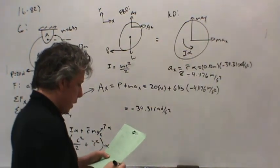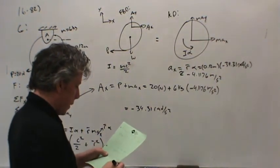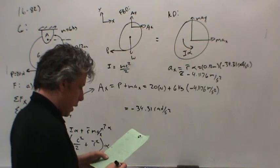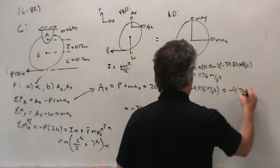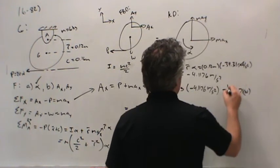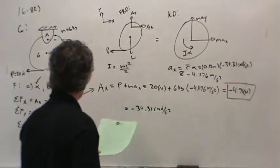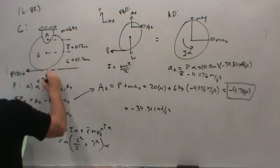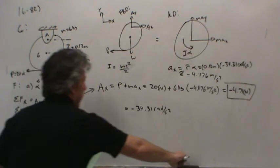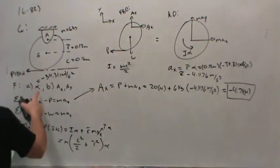We end up with newtons for both. That comes out to negative 4.71 newtons. So there's one of our answers. In addition to alpha, negative 34.31 radians per second squared. So we've got alpha, we've got Ax, now we need Ay.